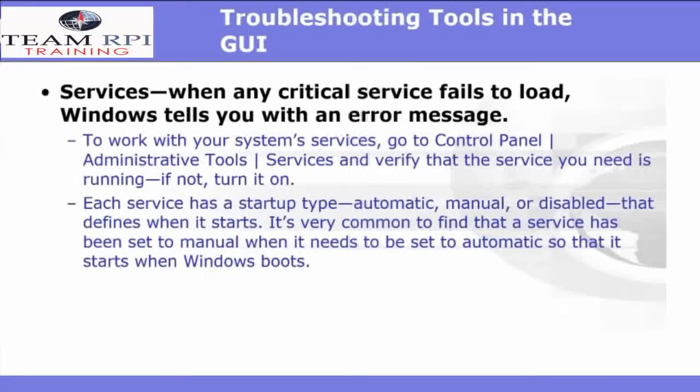Another issue that you can have is when critical services fail to load. Each service has a startup type: automatic, manual, or disabled. To work with the system services, you'll need to go to Control Panel, then navigate to Administrative Tools, and then Services. Once there, you can verify the service that you need is running or not, and turn it on.